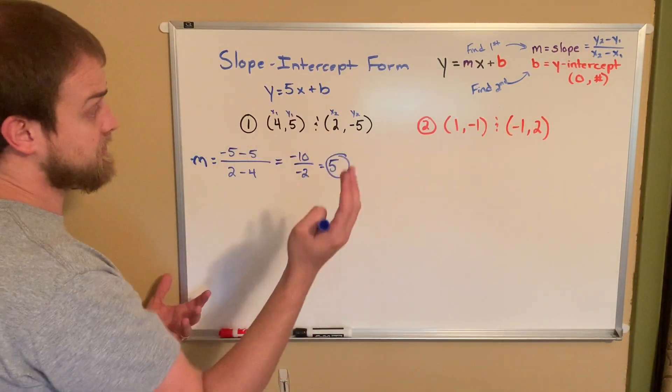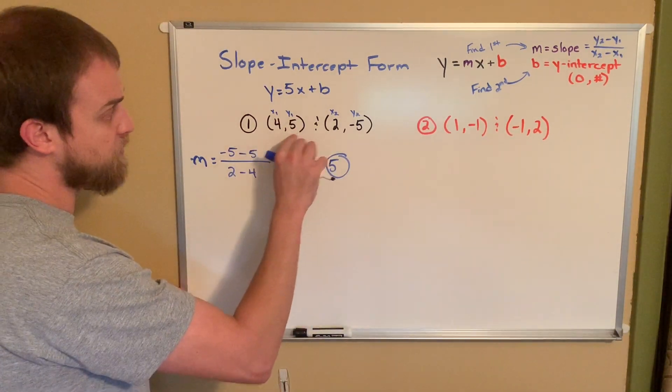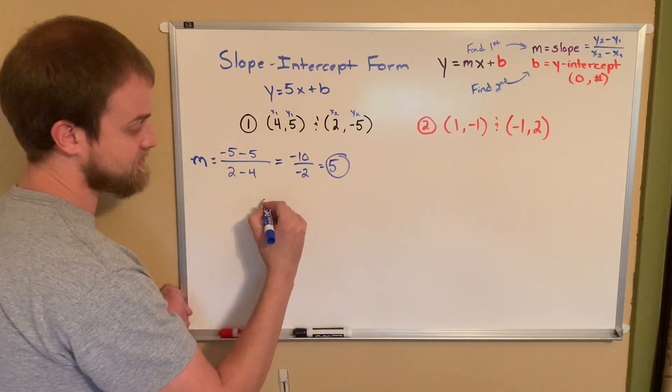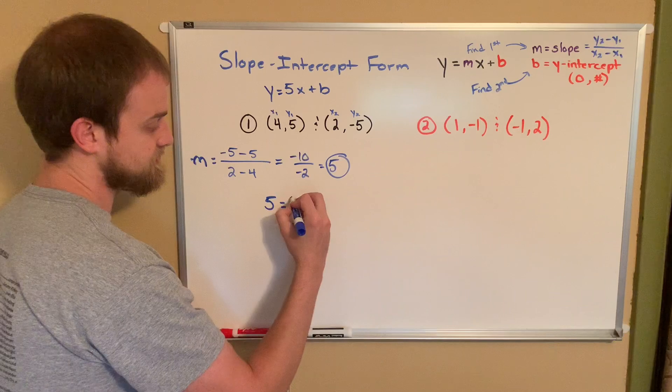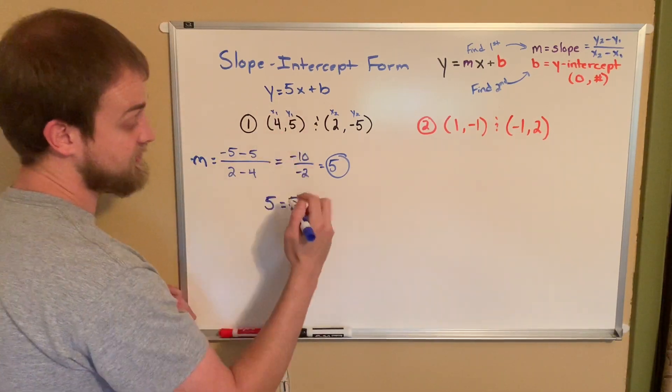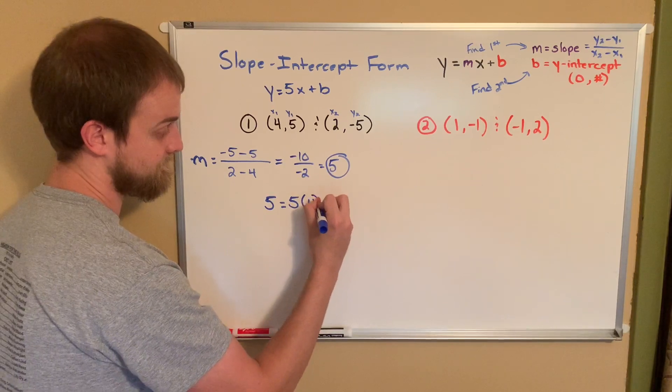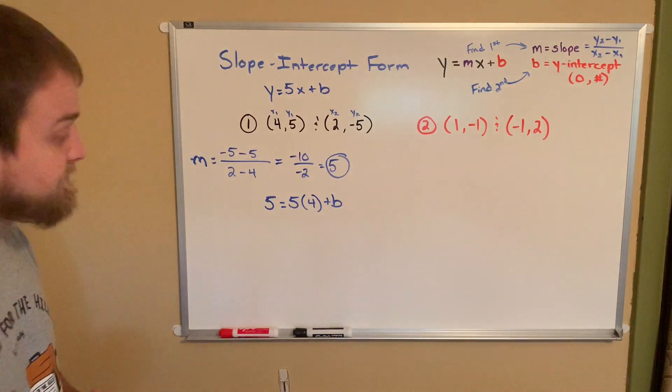Now here's the cool part of this. You can use either ordered pair and you'll get the same value for b. That's the point of all this. This is all the same linear relationship. So let's pick one. I'm just going to go with the first one. Both numbers are positive. It might keep things easy for us. My y value in the first equation is 5. So I'm going to write 5 equals. Well, my slope turns out to be 5. My x value is 4 plus b.